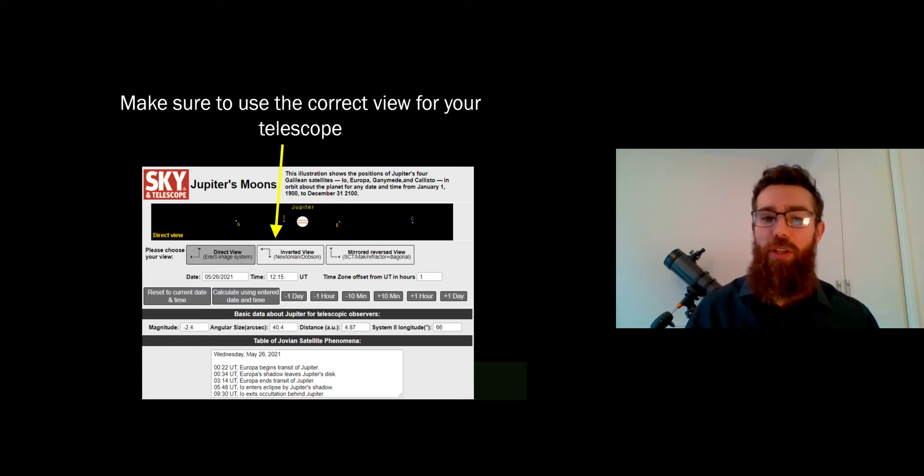Depending on what style telescope you're using, the optics are slightly different, so the image that you're actually seeing is going to be slightly different. Just make sure you've got the right option there because it'll either be inverted, mirror reversed, or slightly different. Make sure you've got that telescope type selected correctly for yours.